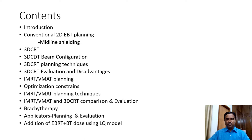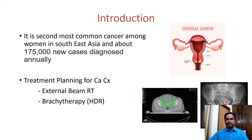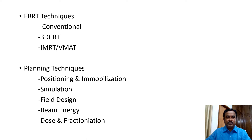As you all know, cancer of the cervix is one of the most common cancers among women, especially in Southeast Asia, and a huge number of women are diagnosed every year. As far as radiation treatment for cervix is concerned, it consists of two parts: mainly external beam radiotherapy delivered using either a cobalt unit or linear accelerator, and the other is brachytherapy — nowadays mostly using a high dose rate afterloader machine.